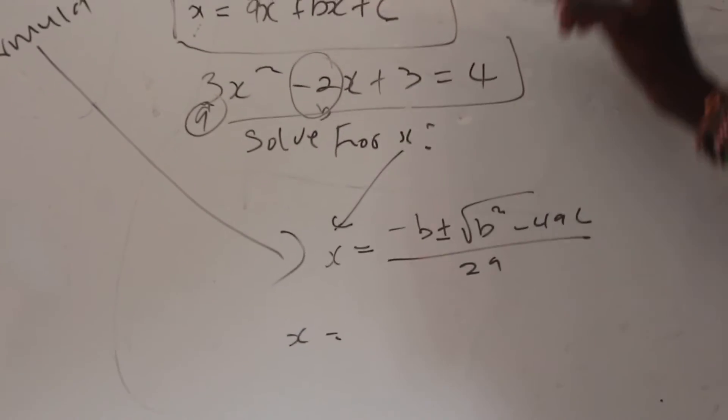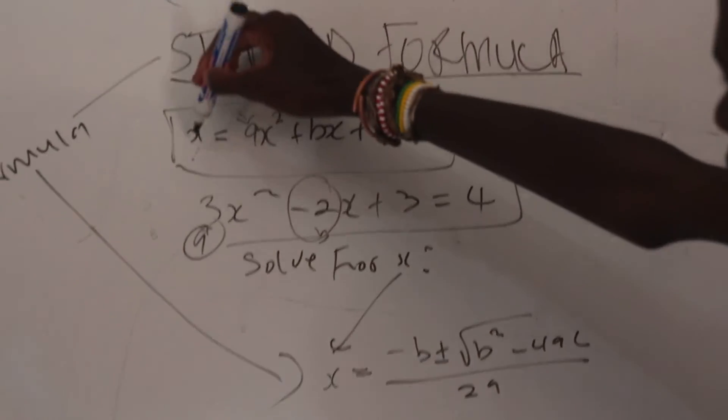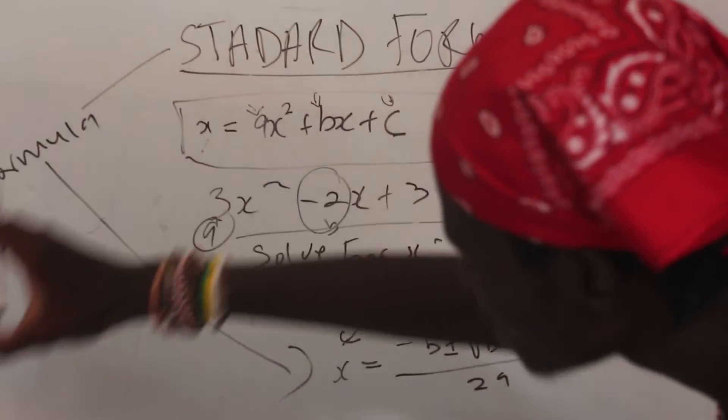And then our c is there. But now you have to think about something. This can't just be our c because what our standard formula says is that you can only solve for this if this whole thing is equated to zero.